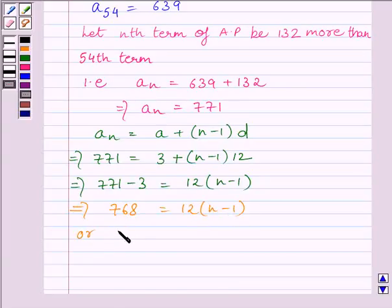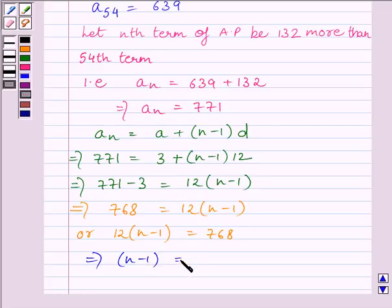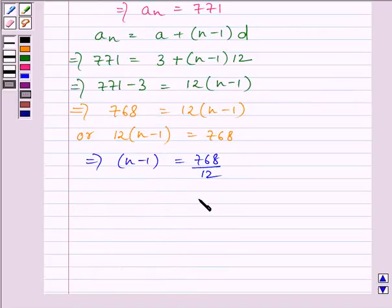Or we can write 12 multiplied by (n-1) is equal to 768. This further implies (n-1) is equal to 768 upon 12, which is equal to 64.